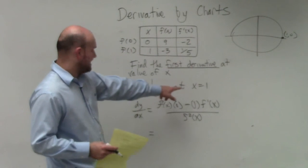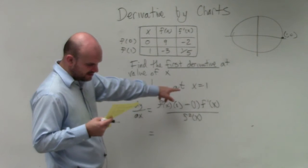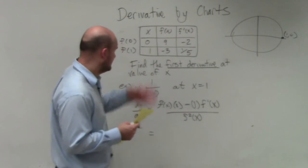So f of x at x equals 1, as I said? Yes. f of x at x equals 1 is going to be negative 3.